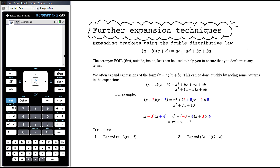We're often looking at expanding expressions of this form, particularly when we get into working with quadratic functions, and then beyond that cubic and quartic functions. If we're expanding (x plus a) times (x plus another number), this can be done really quickly by noting some patterns. Using FOIL, we do x times x which is x squared, x times b which is bx, a times x which is ax, and a times b which is ab.